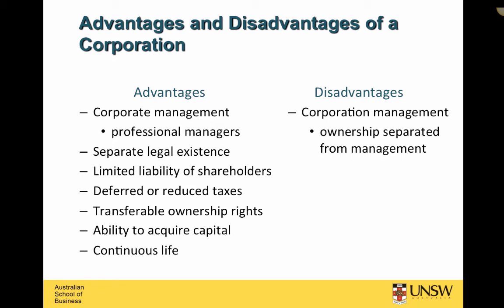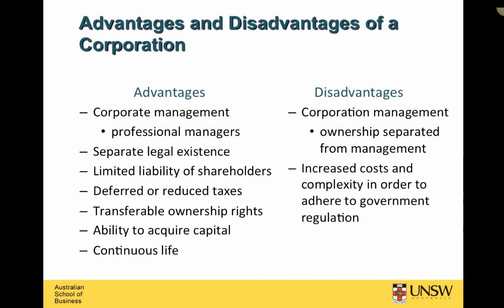Disadvantages include the idea of ownership and control being separate. Sometimes managers may not do everything that is in the interest of owners, leading to what we call agency problems. We will look a little towards the end of this course at how we can try to align incentives, but this is largely left to third-year courses. It is also quite costly to run a company — you have to have a board of directors that meets, you must have a constitution, and you must follow all of the regulation. There is a burden of regulation which you might want to avoid if you're just starting out in business.